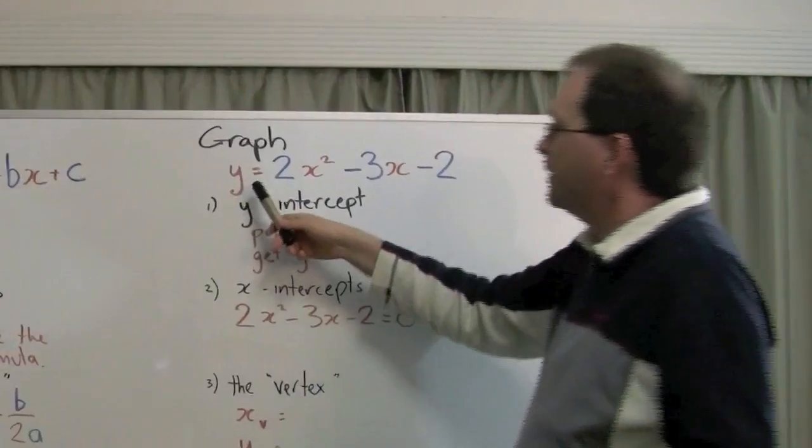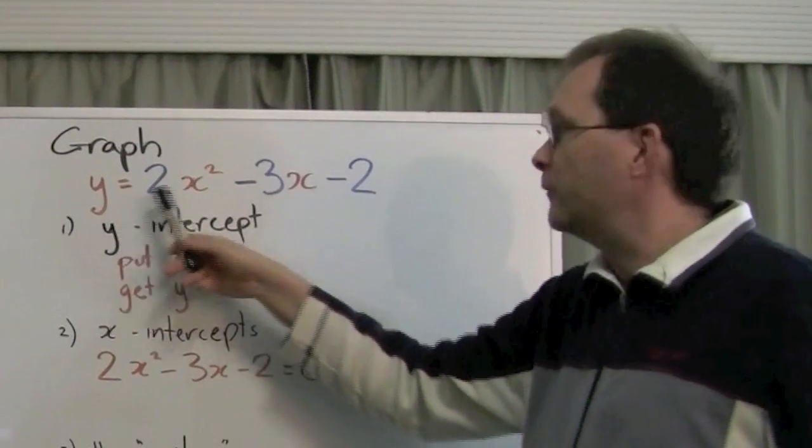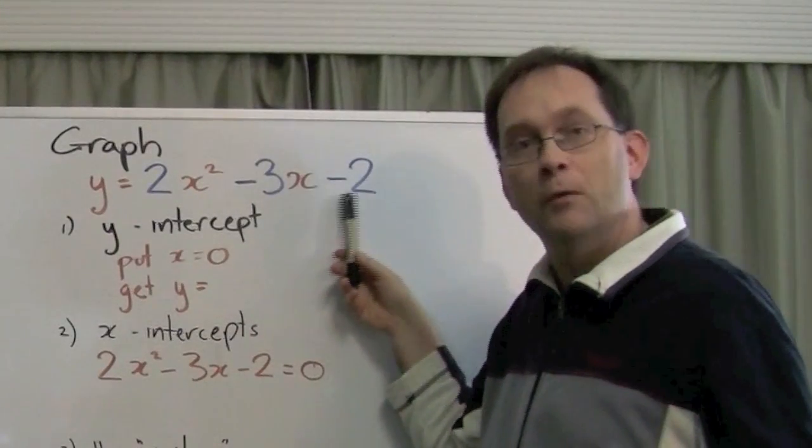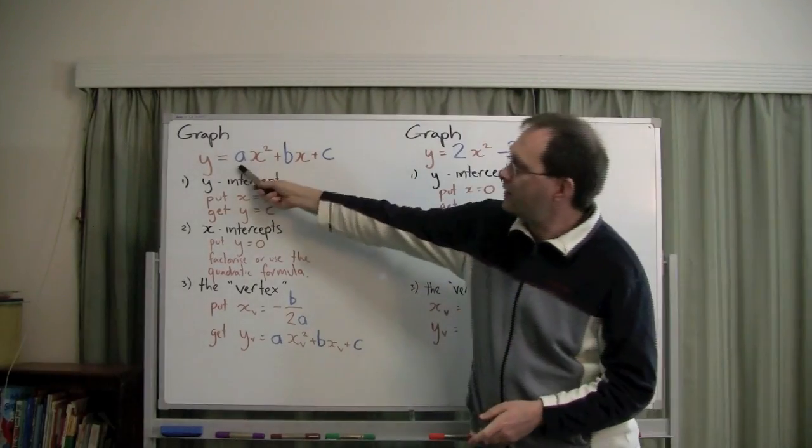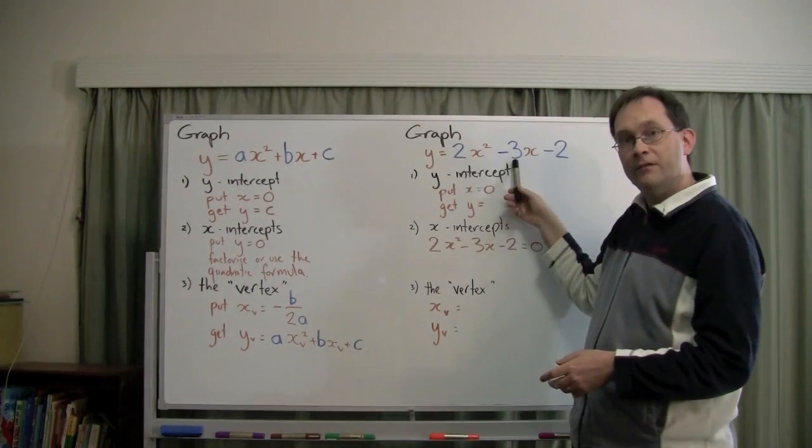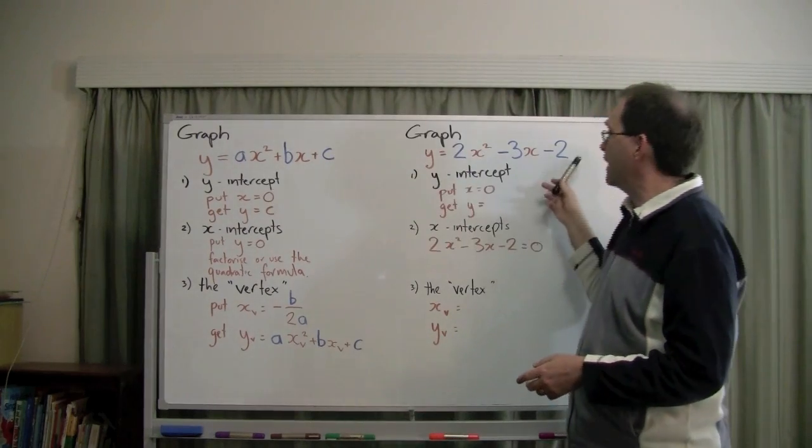An example might be y equals 2 times x squared minus 3 times x minus 2. Here, the a is 2, the b is minus 3, and the c is minus 2.